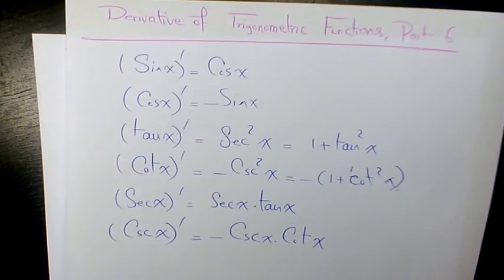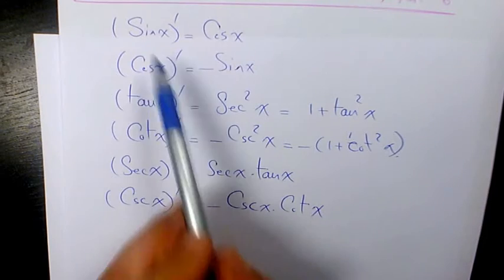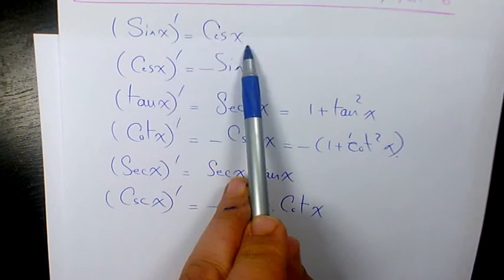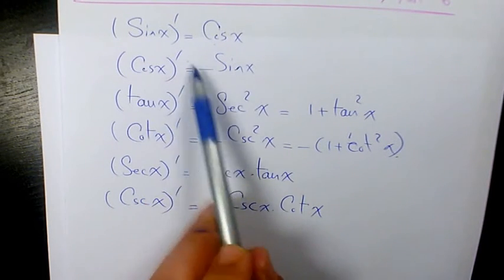Let's have a quick review of the derivative of trig functions. We have the derivative of sine x is cosine x, derivative of cosine x is negative sine x.